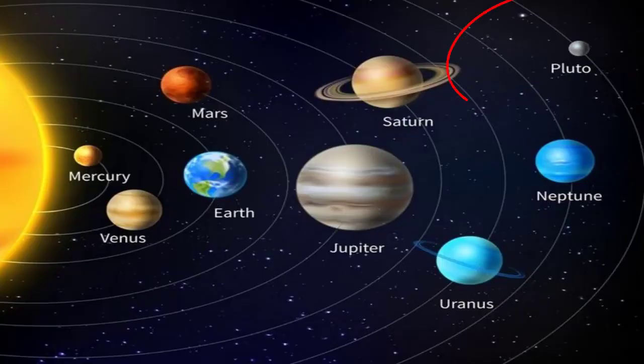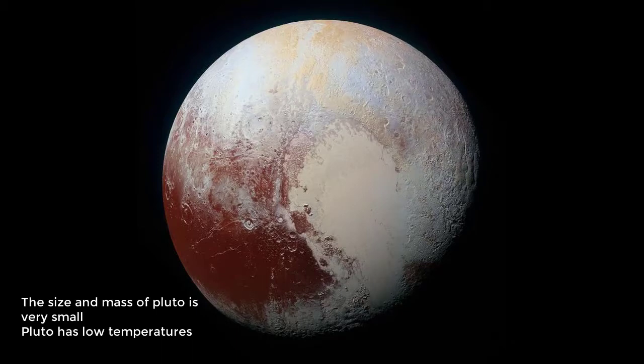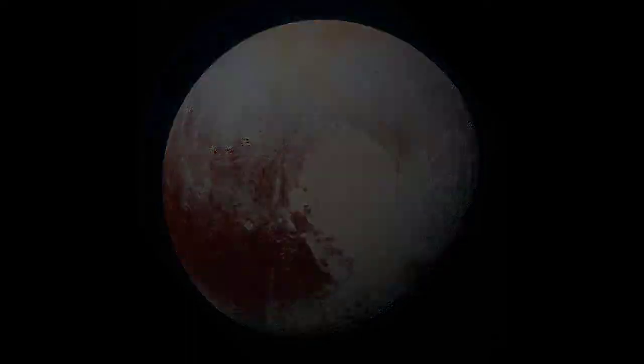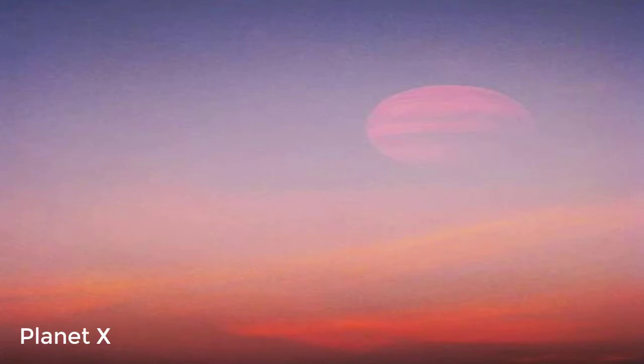There are reasons why Pluto isn't considered a planet any longer. The first is that the size and mass of Pluto is very small compared to the other eight planets, and it has very low temperatures as well. In the pursuit for a ninth planet, scientists have allegedly discovered a planet called Planet X, which is believed to be about 5,000 times the mass of Pluto.